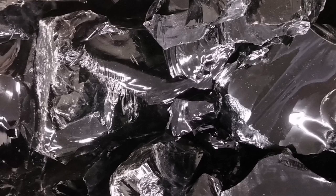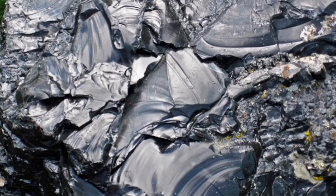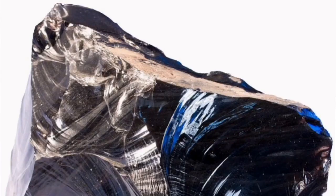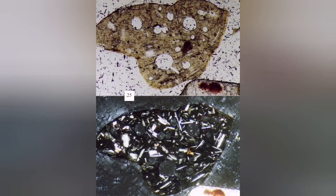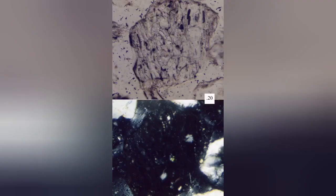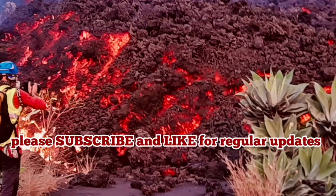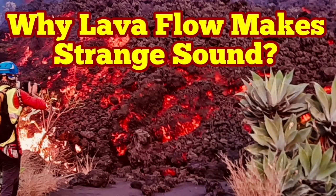Lava is mainly composed of glass — glass which has not had the time to actually form crystals — and it can carry crystals inside it. As you can see in these images, in normal light and cross-polarized light, the black part is the actual glass material. You see a lot of other crystals in it, but the main mass is glass. The glass appears dark under cross-polarized light. That is the reason lava makes this strange sound.